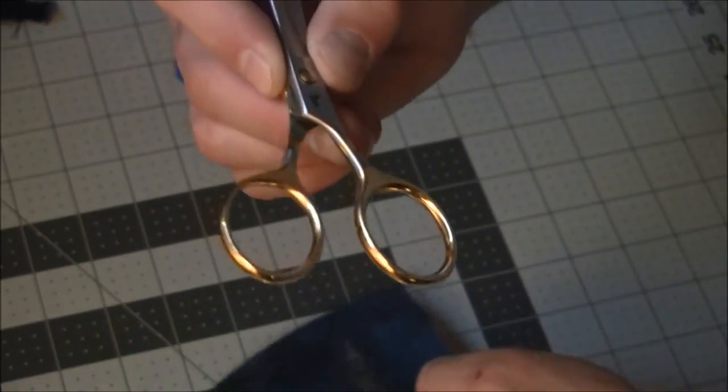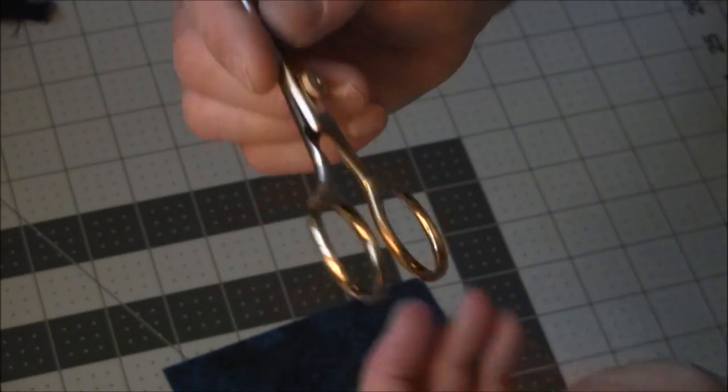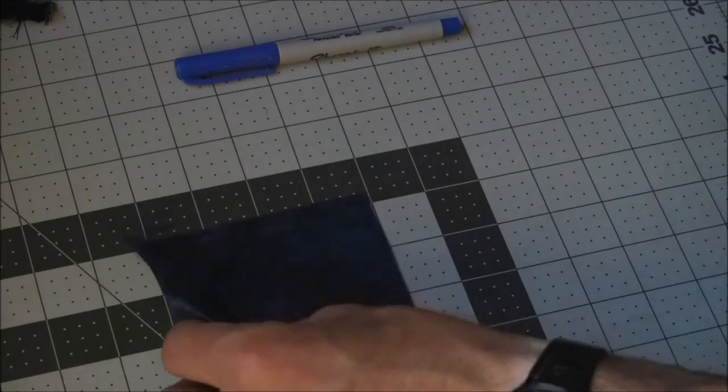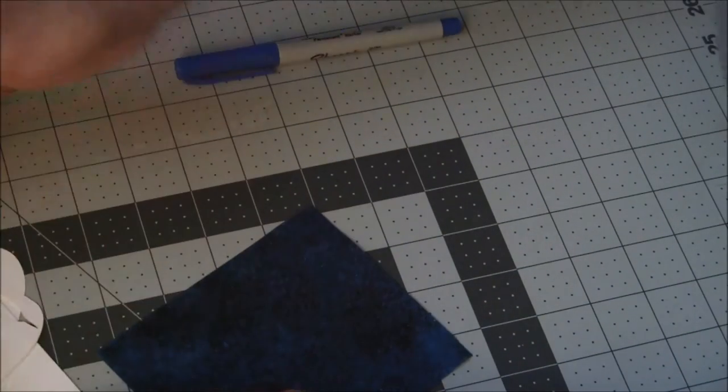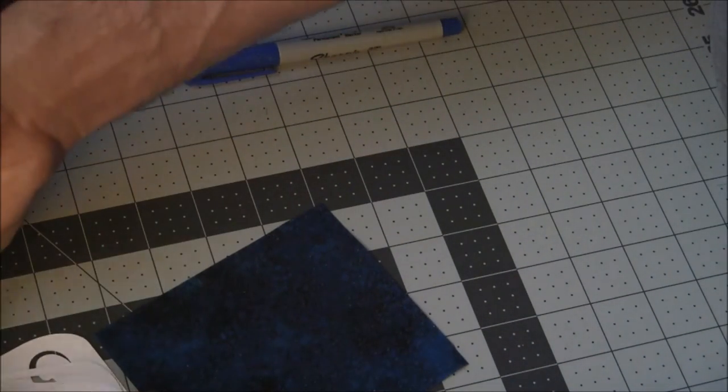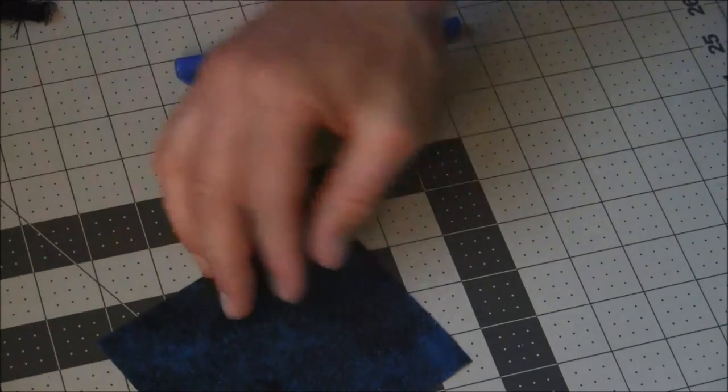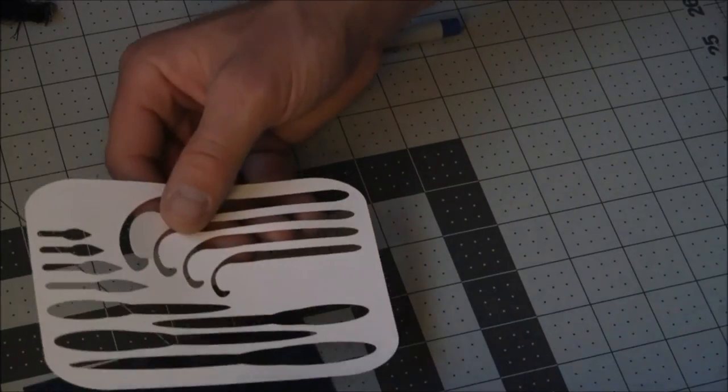What I like to use are these Dr. Slick scissors—they're razor scissors from Hairline Dublin. You can take your pattern. I'm going to start with the worm pattern and then cut out a leech.